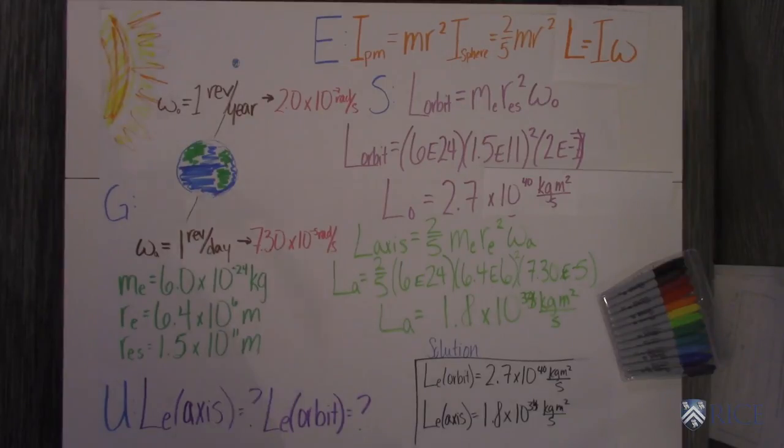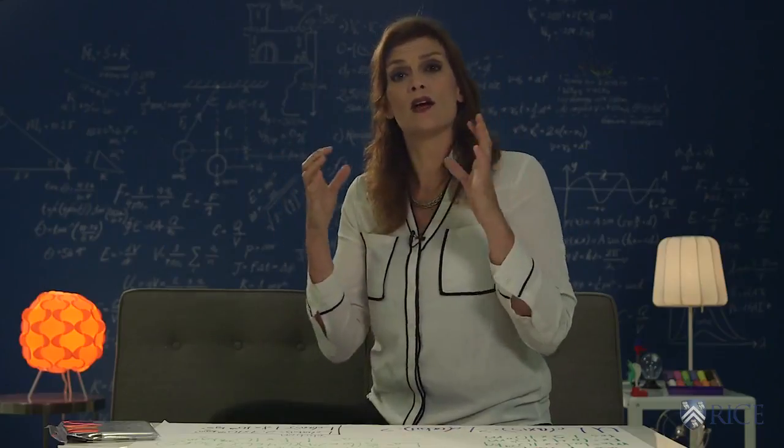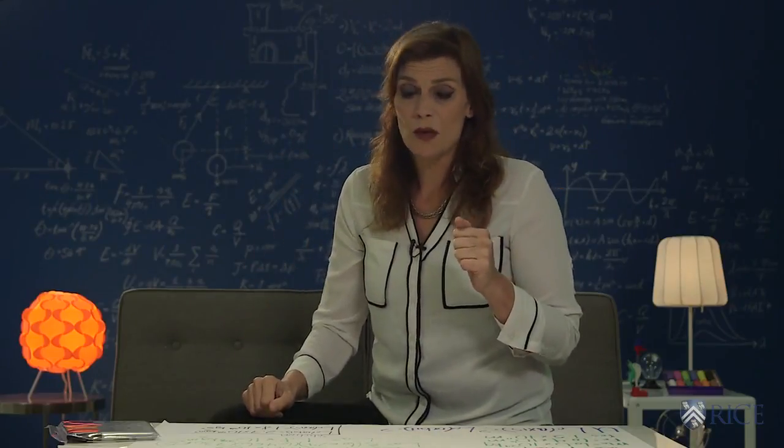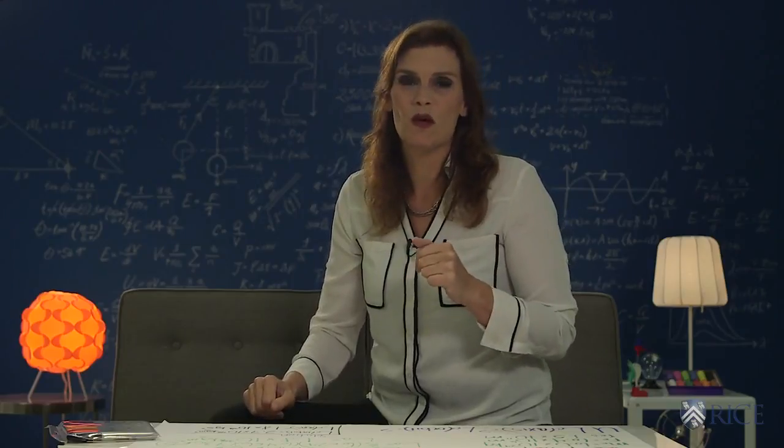So our solution is that we've got actually six orders of magnitude difference between the angular momentum of the Earth spinning in its orbit and the Earth spinning on its axis. So that's a pretty interesting way to think about angular momentum and I hope this helps you when you're working your homework problems.